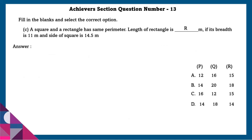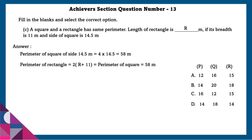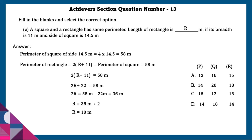Part C: A square and a rectangle have the same perimeter. The length of the rectangle is R meters, its breadth is 11 meters, and the side of the square is 14.5 meters. Perimeter of the square equals 58 meters. Perimeter of rectangle equals 2 times (R plus 11) equals 58. Simplifying gives R equals 18.